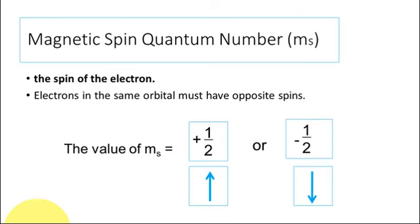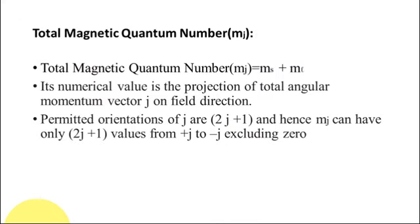The total magnetic quantum number mj has 2j plus 1 values, ranging from minus j to plus j, with zero excluded.